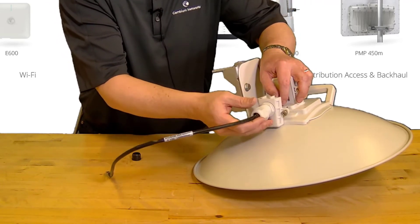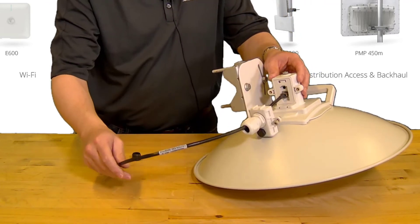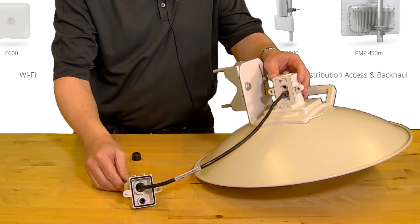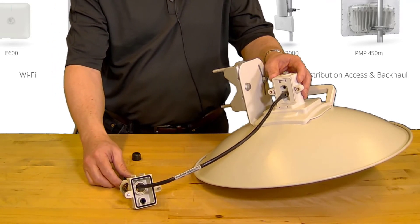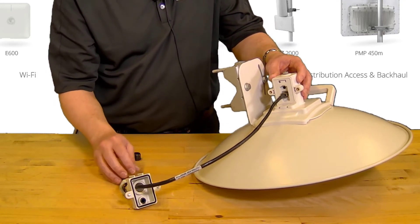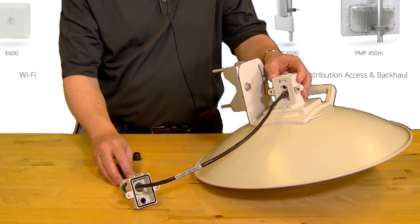The radio should power up. Note that if you plan to use the alignment tone feature to aim the radio, alignment should be performed now prior to installing the cover and gland. The alignment tone port is not accessible once the gland is installed.